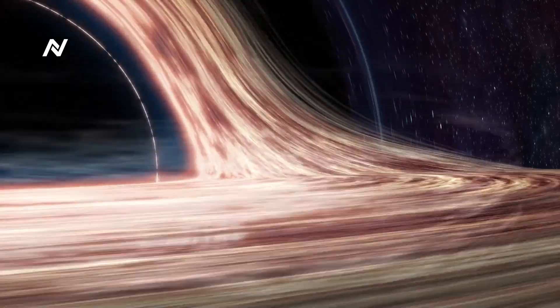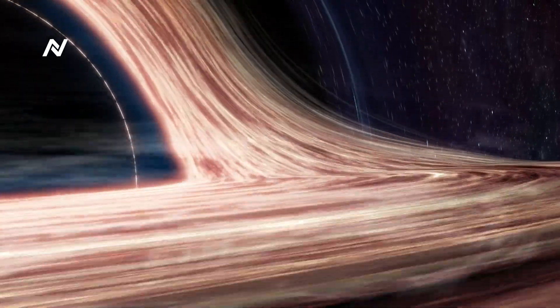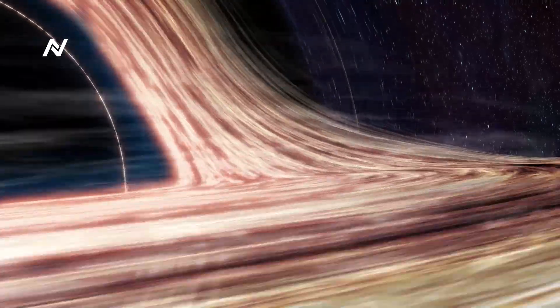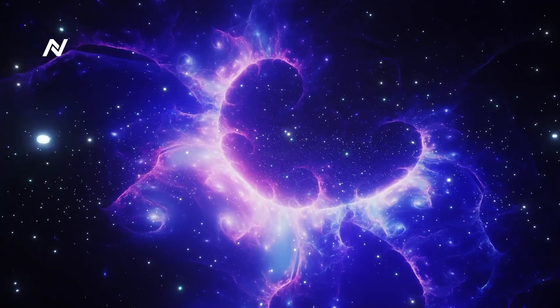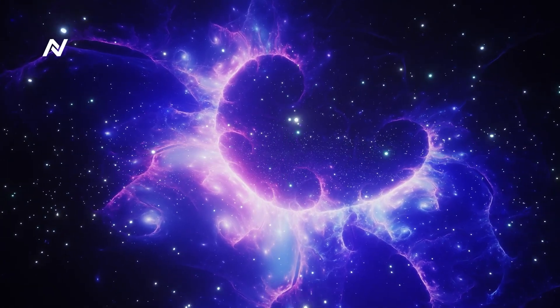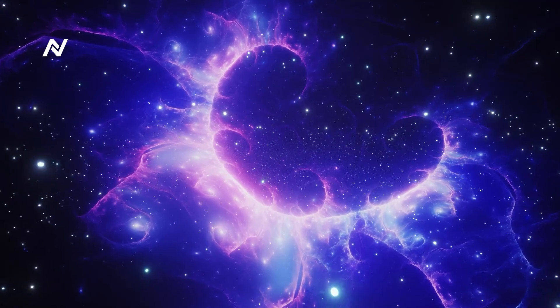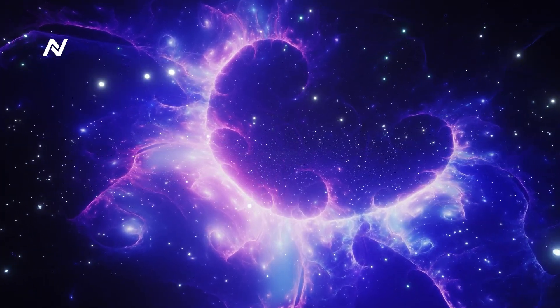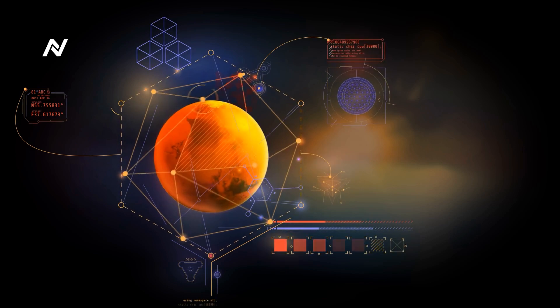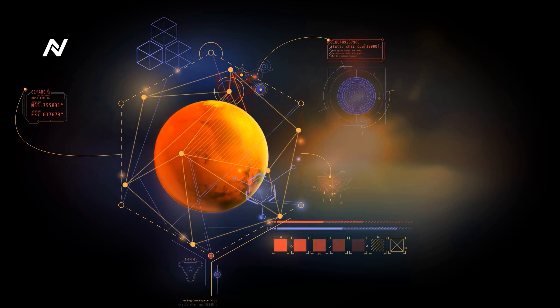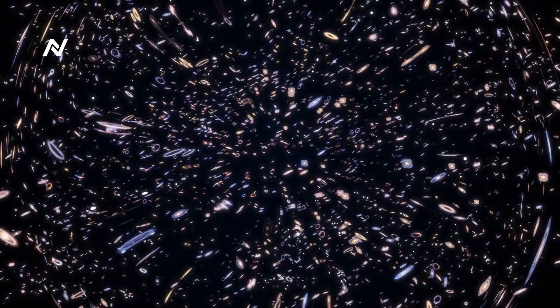What the Alcubierre warp drive proposes is that, instead of simply reacting to these curves, we actively manipulate spacetime to our advantage. By contracting space in front of the ship and expanding it behind, the warp drive would allow the spacecraft to surf through the universe without being limited by the speed of light. Inside the warp bubble, the spacecraft would remain at rest while the space around it moves. This is crucial, because it means the ship isn't violating relativity's rule that nothing can move faster than light within space.